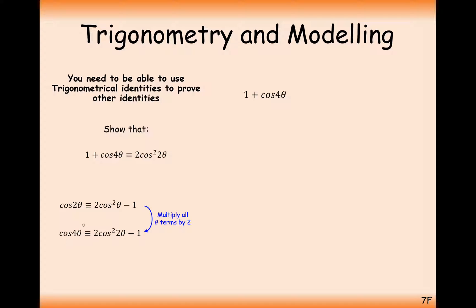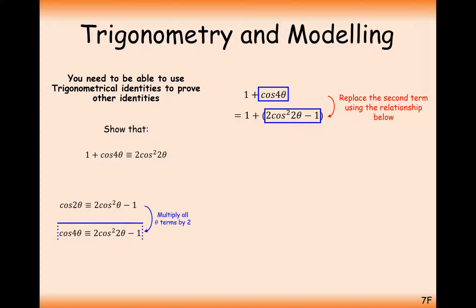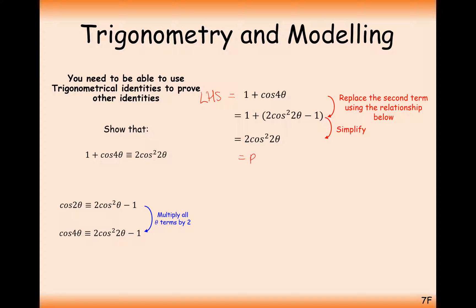What I'm going to do then is replace cos4θ in the identity with 2cos²2θ − 1. Now the minus 1s cancel out — that's a nice easy bit of simplification. And all of a sudden, the left-hand side is equal to the right-hand side. Again, we've taken an identity we know and manipulated it so it fits the trig identity we're trying to prove.